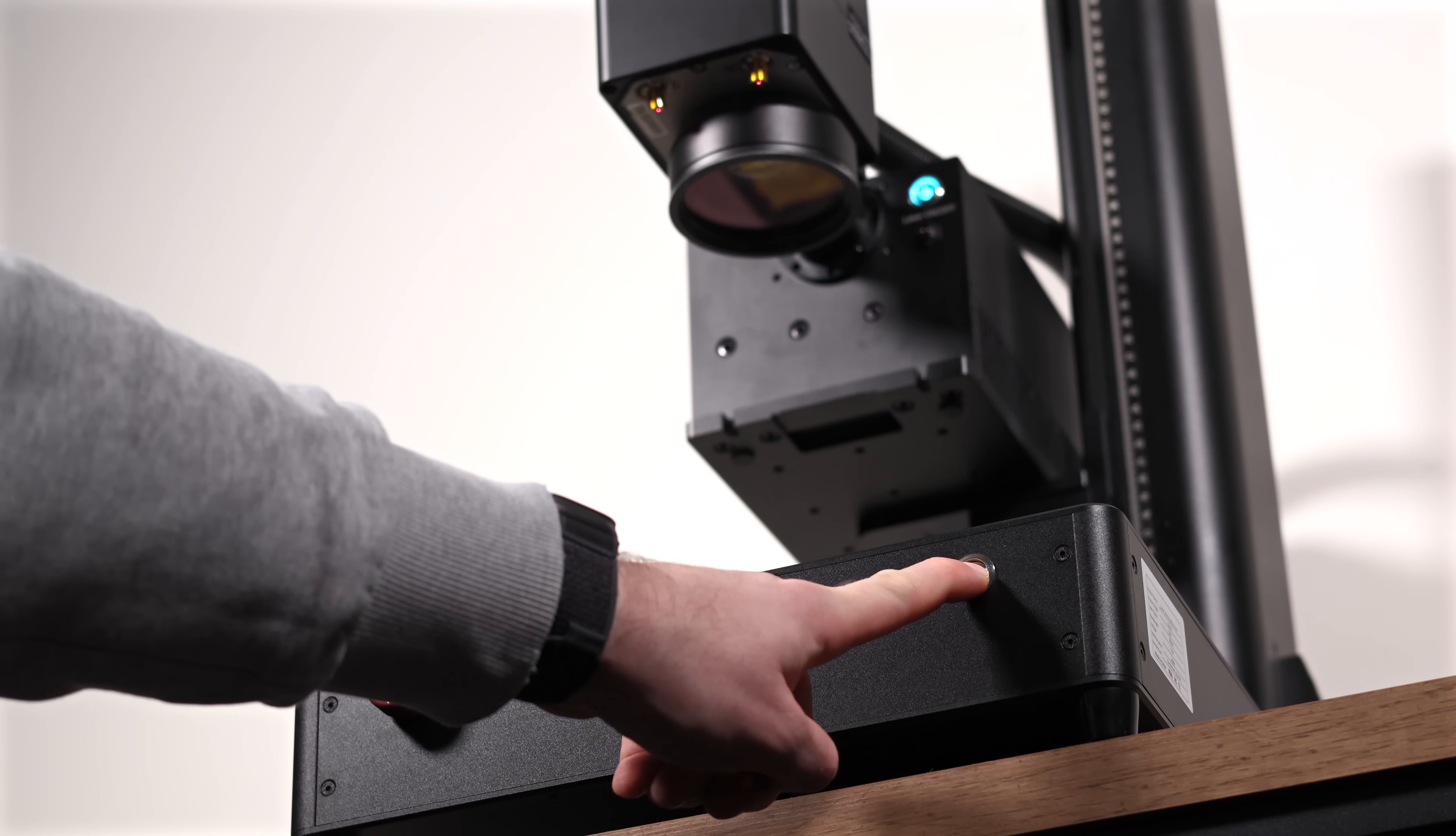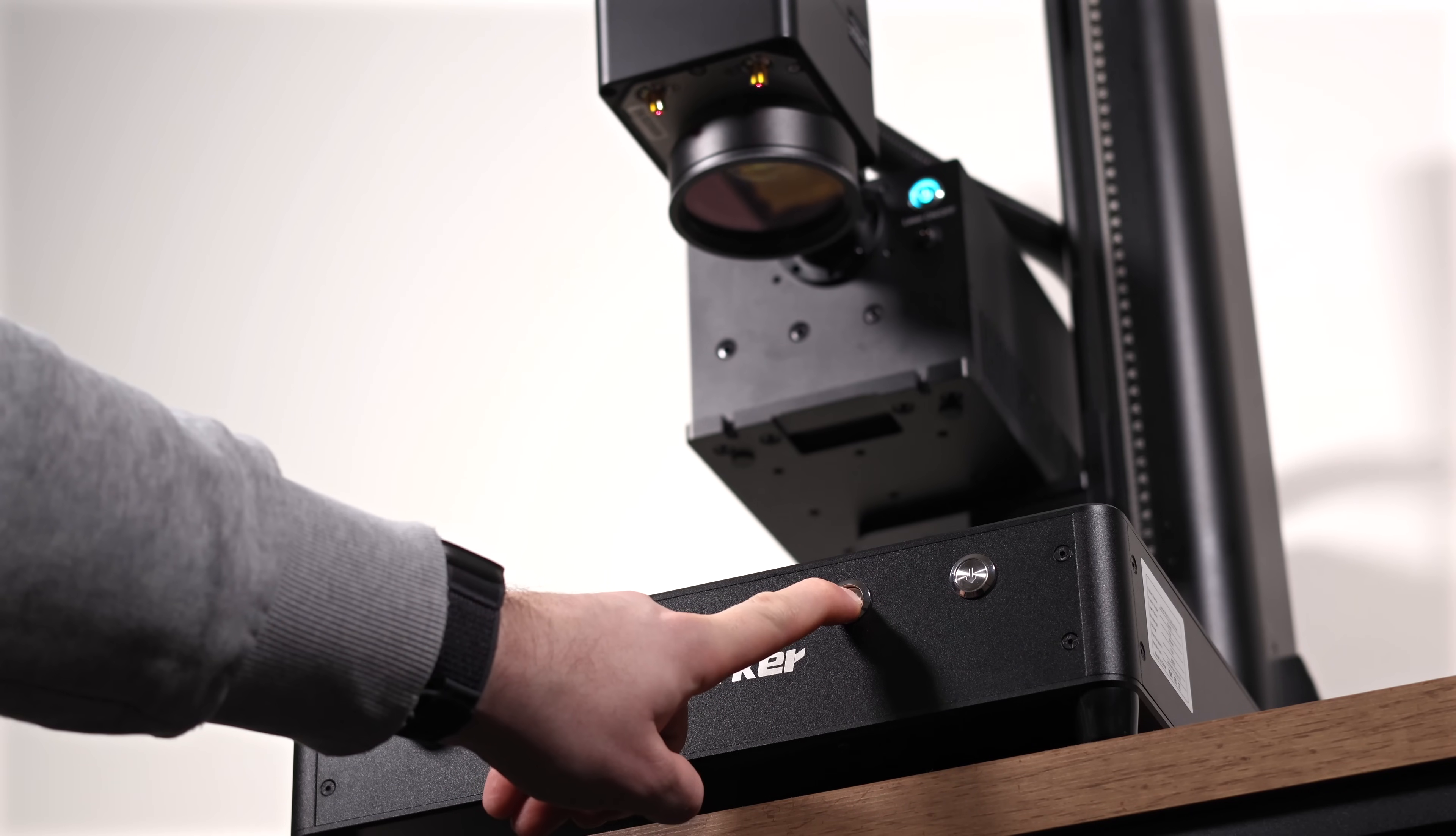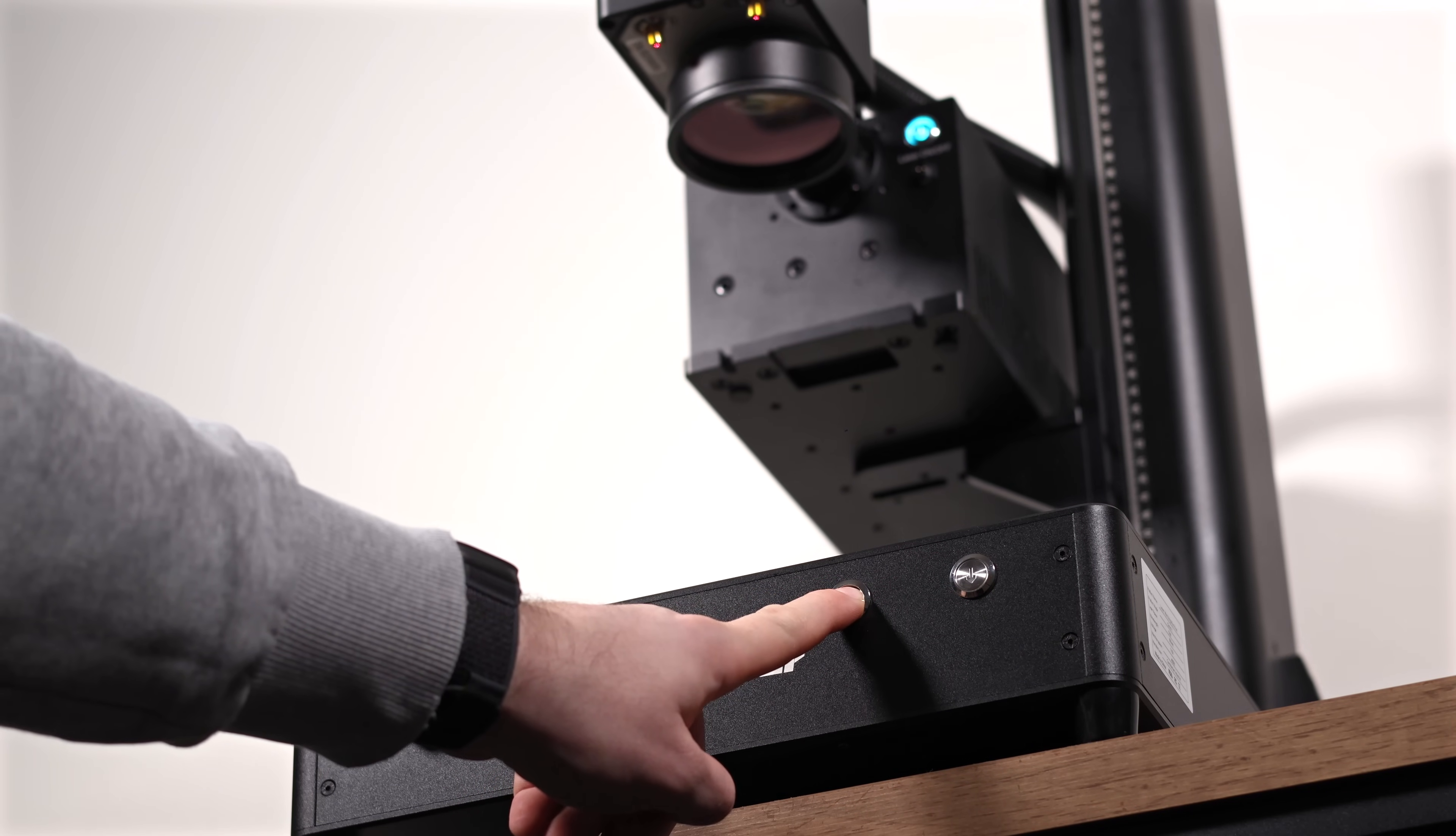Focus can be easily adjusted using the knob on top of the laser, or with the two buttons located on the front of the machine. Now that we've got everything set up, let's dive into some projects and see the Omni one in action.